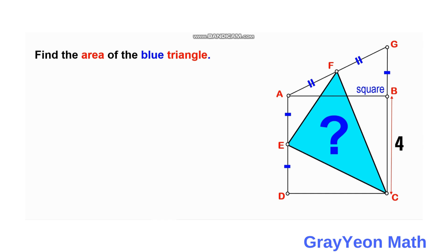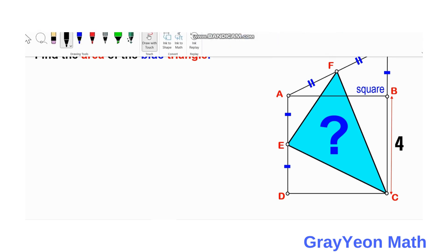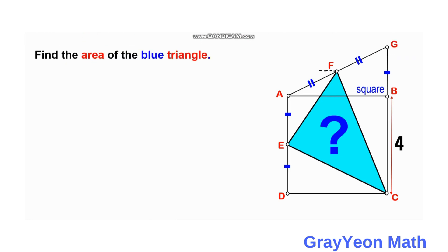So the first method: we can draw a line from point F to the left, and from point A upwards until they meet perpendicularly. And also from F to the side of segment GB.